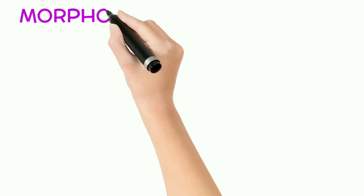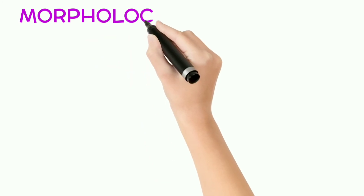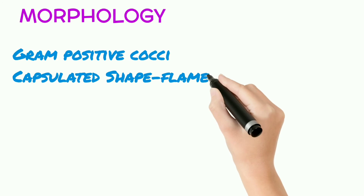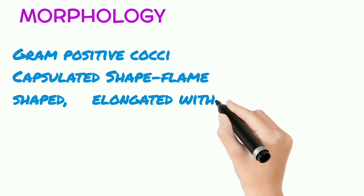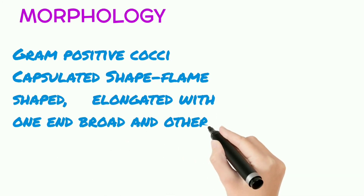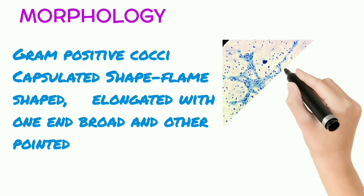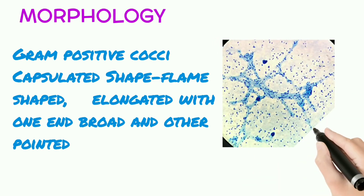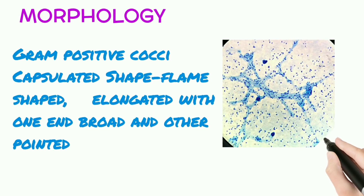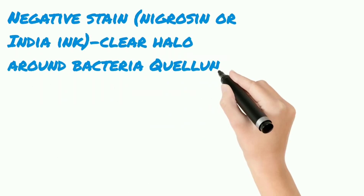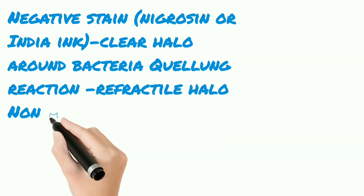Let's first start with the morphology. It is a gram-positive coccus, capsulated, with a flame shape — elongated with one end broad and the other pointed. In the gram stain, nigrosin, or Indian ink preparation, it shows a clear refractile halo around the bacteria, known as the Quellung reaction. This bacteria is non-motile and non-sporing.